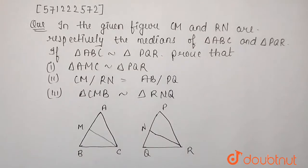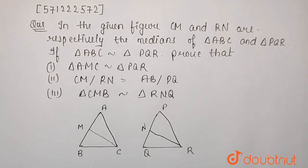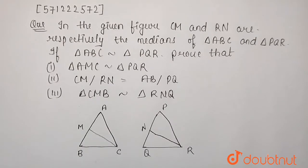So students, the given question is: in the given figure, CM and RN are respectively the medians of triangle ABC and triangle PQR. If triangle ABC is similar to triangle PQR, prove that: first, triangle AMC is similar to triangle PNR; second, CM by RN is equal to AB by PQ; third, triangle CMB is similar to triangle RNQ.